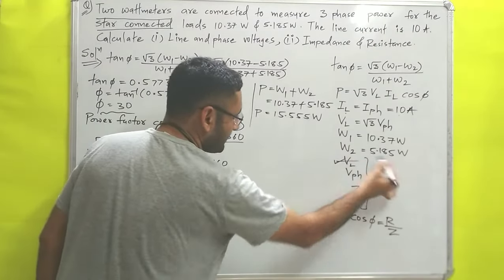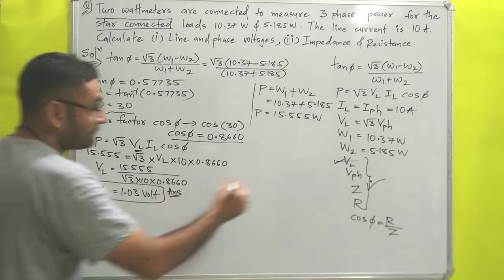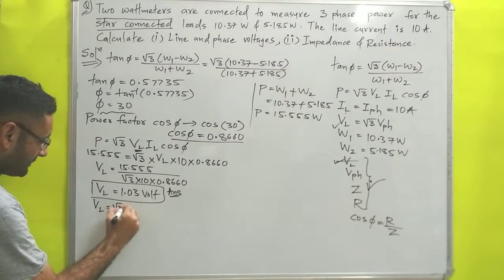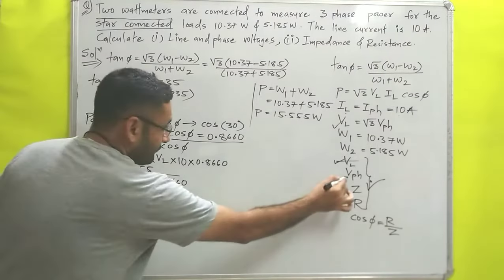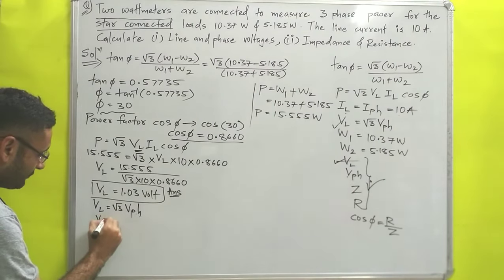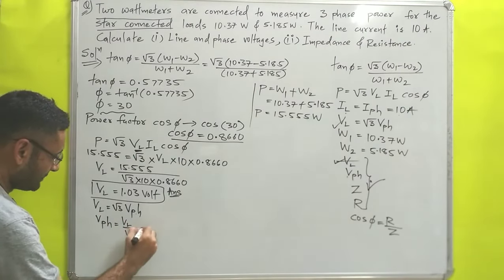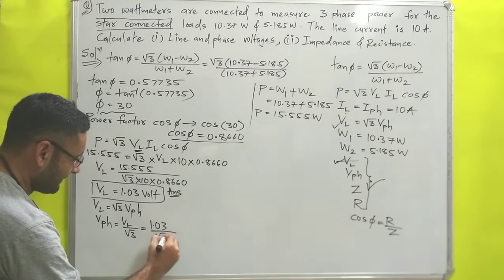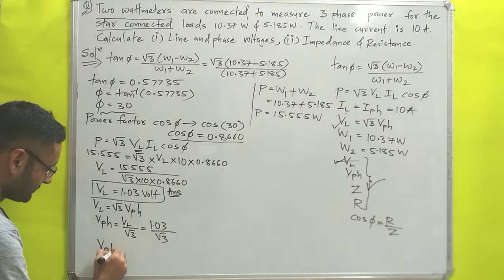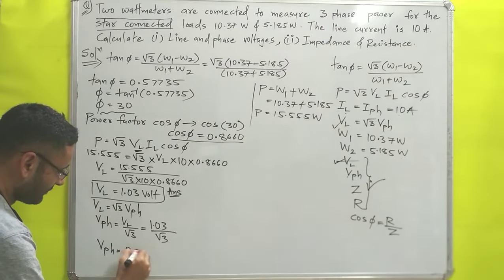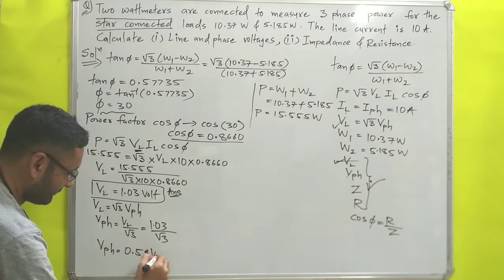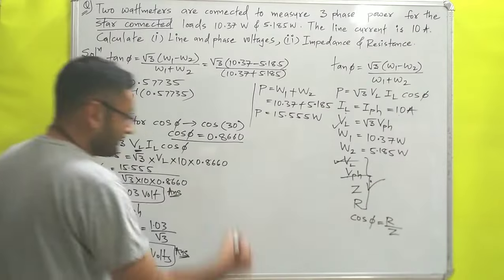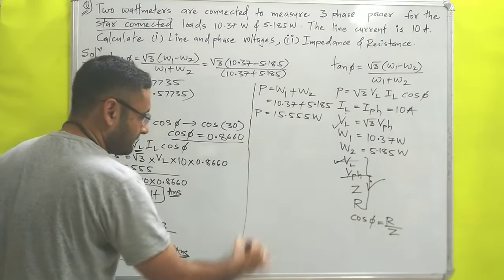Now we know that for star connection VL = √3 × VPH. So phase voltage VPH = VL / √3 = 1.03 / √3. Calculating this gives VPH ≈ 0.59 volts. That is answer number two.